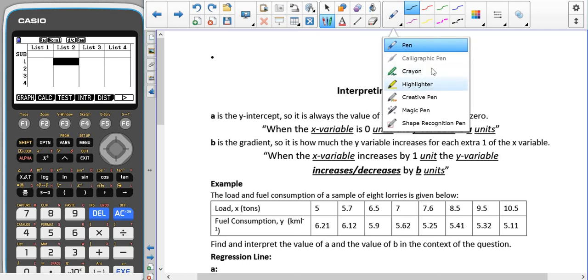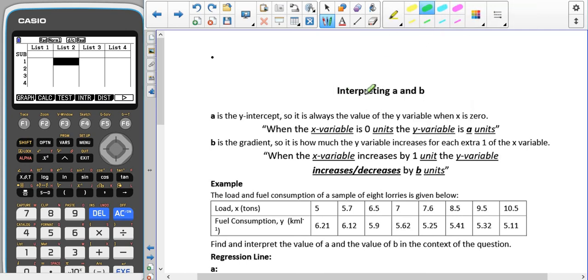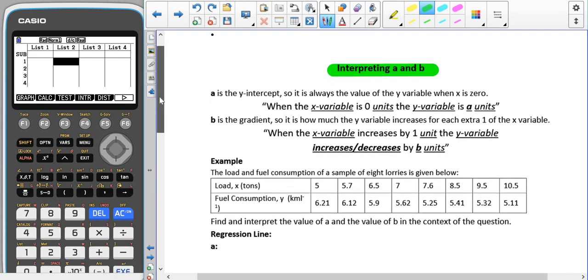So now that we've looked at how to find a least squares regression line, or regression line, which is another way of saying the line of best fit, we're going to have a look at how we interpret the a and the b from the equation of the line.